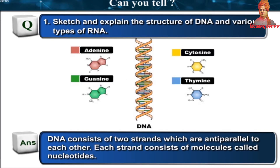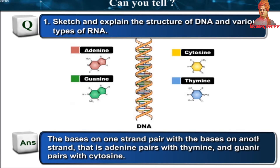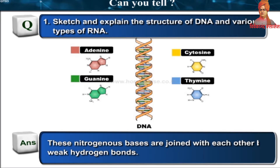DNA consists of two strands which are anti-parallel to each other. Each strand consists of molecules called nucleotides. Each nucleotide contains a phosphate group, a sugar molecule and a nitrogen base. The bases on one strand pair with the bases of another strand — adenine pairs with thymine and guanine pairs with cytosine.